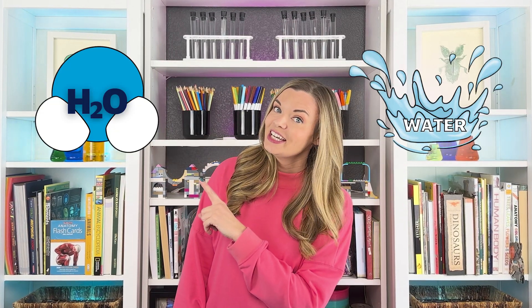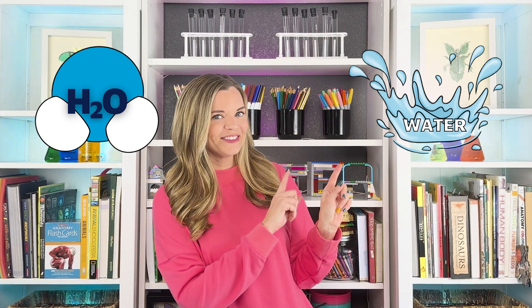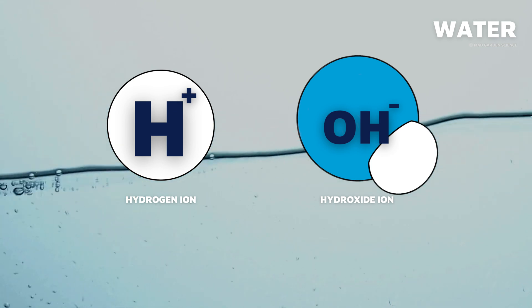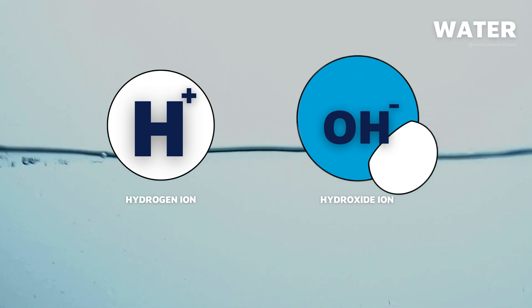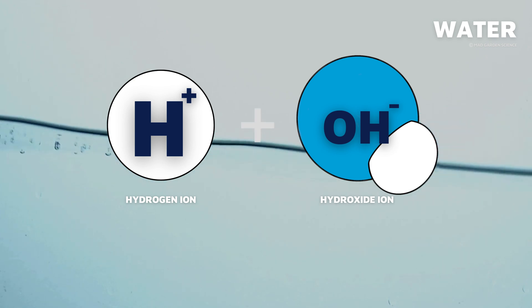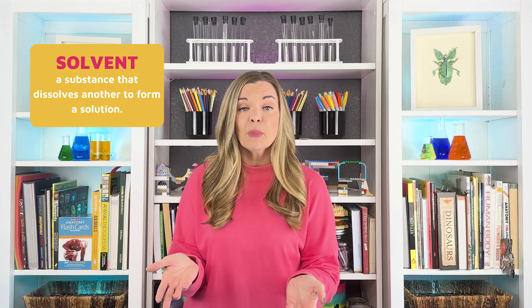Let's begin by looking at pure water — some good ol' H₂O. A water molecule looks like this. In pure water, there are an equal number of hydrogen ions and hydroxide ions. Hydroxide is OH⁻. So when hydroxide gains a hydrogen ion, it becomes H₂O, pure water. Because of water's polarity and its ability to form hydrogen bonds, water is an excellent solvent, meaning it can dissolve many different kinds of molecules.